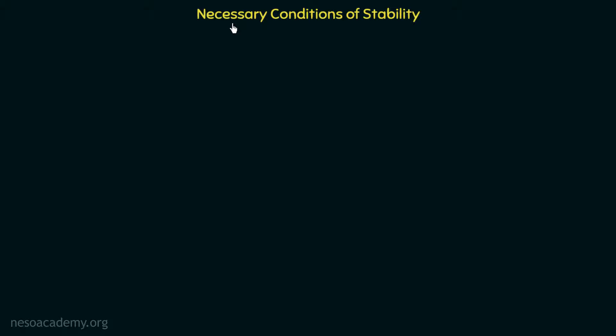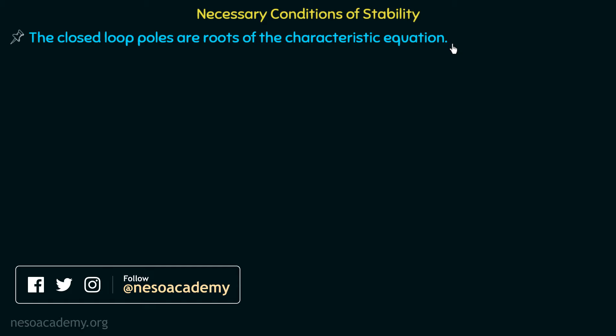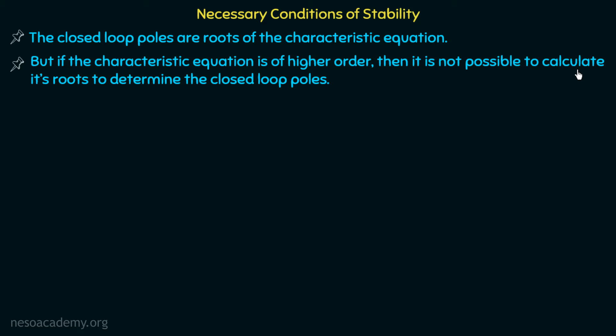Before moving on to Routh-Hurwitz criteria, we will discuss the necessary conditions of stability. We discussed that if we know the poles of the closed-loop transfer function, we can comment on the stability of the system. The closed-loop poles are the roots of the characteristic equation, so we have to find the roots to determine the closed-loop poles. But if the characteristic equation is of higher order, it is not possible to calculate its roots.